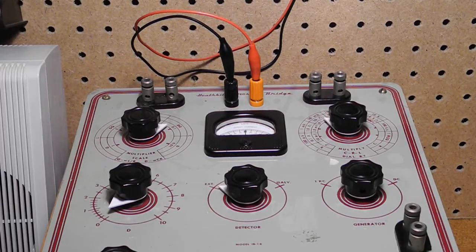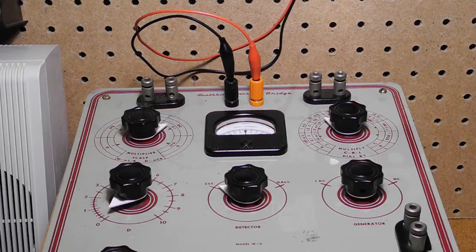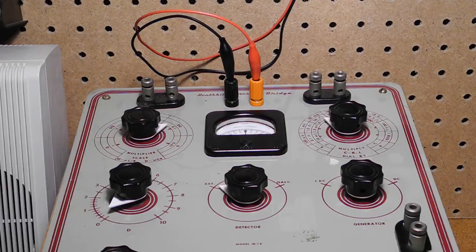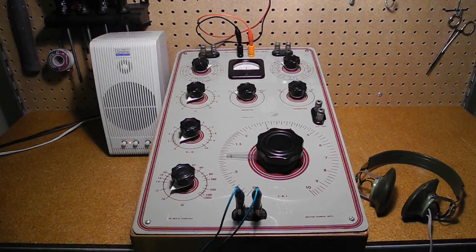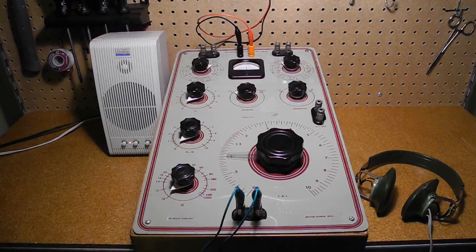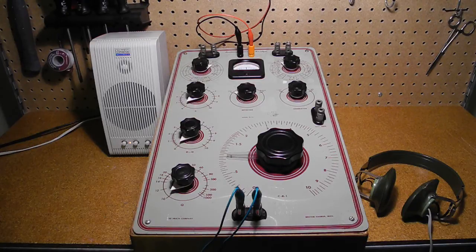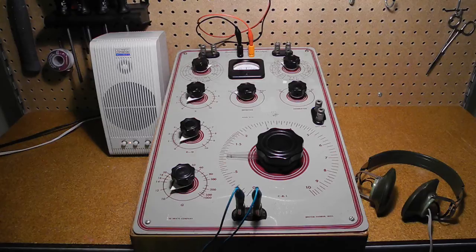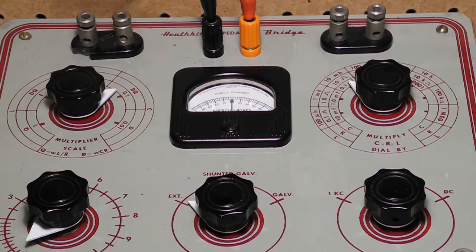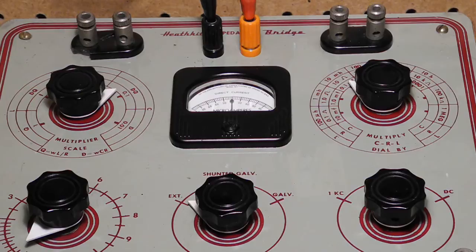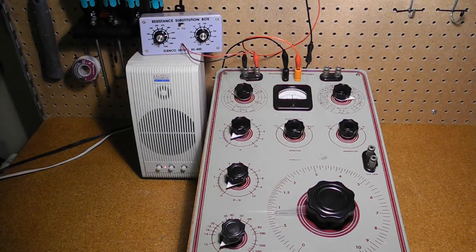I'll run through the types of measurements that the unit can make. I've connected the power jacks to a bench power supply and set it to 6 volts, the same as the battery that would have been used. Normally, the external detector is a set of headphones, like these. Another option, if available, would be to use an oscilloscope or sensitive AC voltmeter. For the demo, I've connected to an amplified PC speaker, so you can hear it in the video. Before making any measurements, you should check that the meter is centered at zero, and if not, adjusted as needed. This rarely needs adjustment.